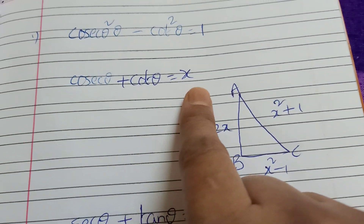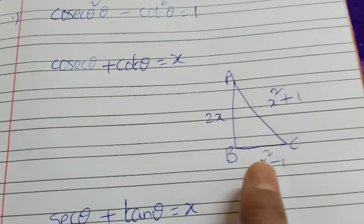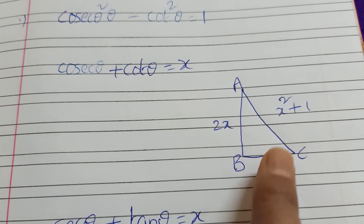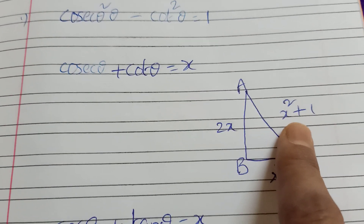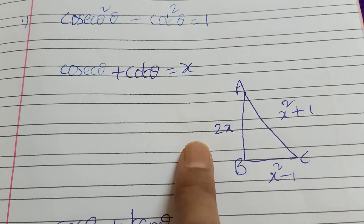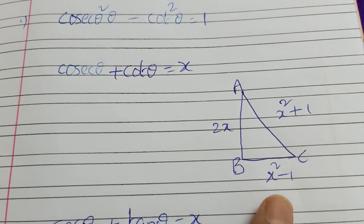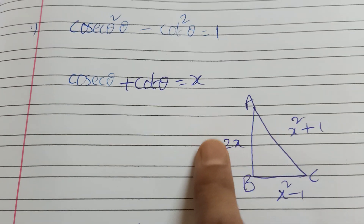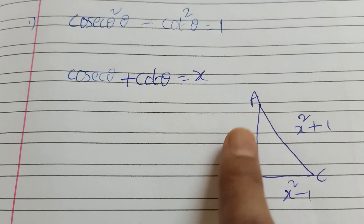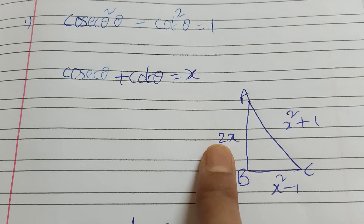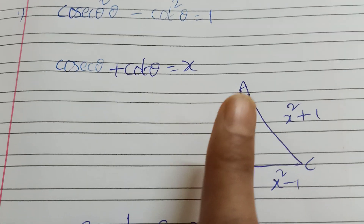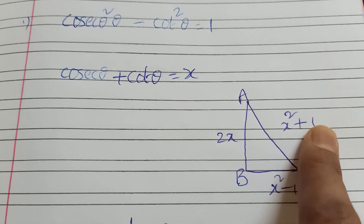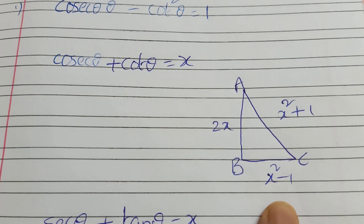This is cos θ plus cos θ equal to x. This is the hypotenuse. Here, 2x is one side, and x² minus 1 is another side. 2x is the opposite side, and we have the hypotenuse and adjacent side.